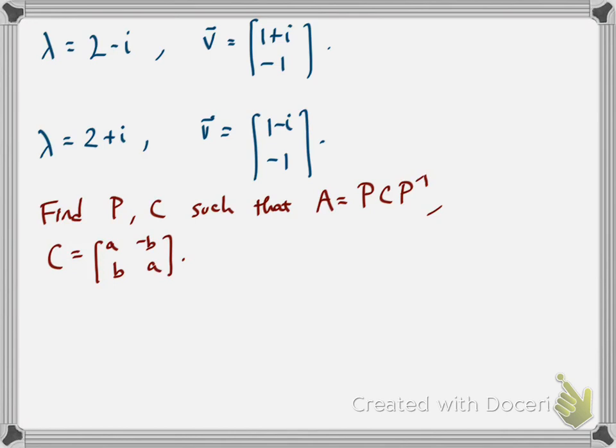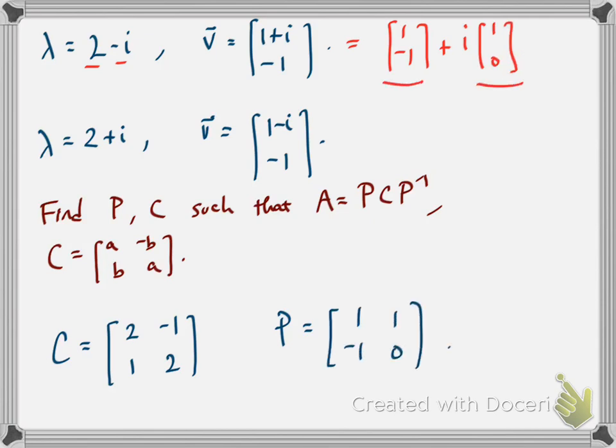And so now, suppose I'm asked to find this matrix P and C, so that A = P·C·P⁻¹, where C has this special shape [a -b; b a]. Well, for the matrix C, I'm just going to look at the coefficients in this eigenvalue, 2 - i. And so I get that C = [2 -1; 1 2]. And for the matrix P, I'm going to take the real and imaginary parts of the corresponding complex eigenvector. So [1 -1; 1 0]—[1; -1] is the first column and [1; 0] is the second.